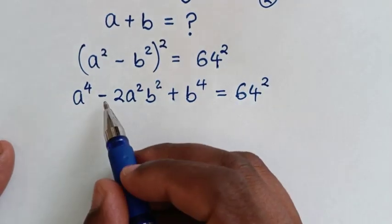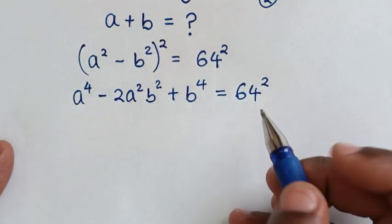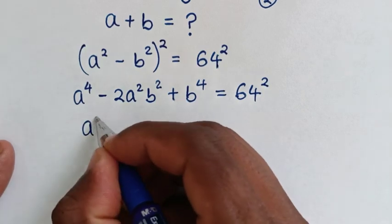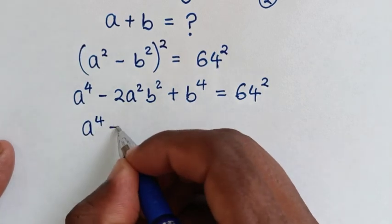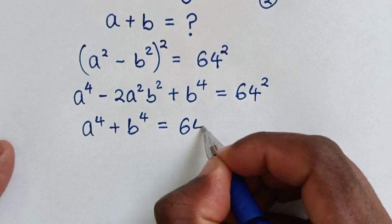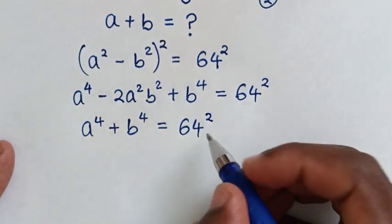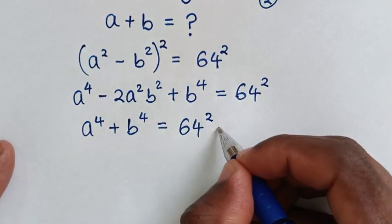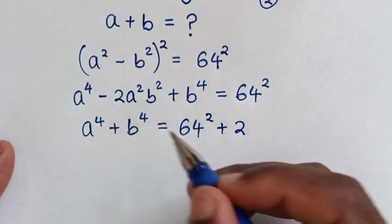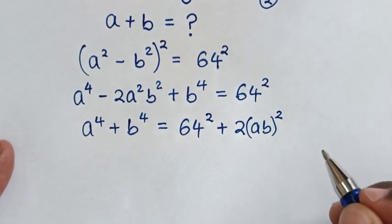In the next step, we take the minus 2a squared b squared to the other side, giving a to the power 4 plus b to the power 4 equals 64 squared plus 2a squared b squared, which is the same as ab bracket squared.